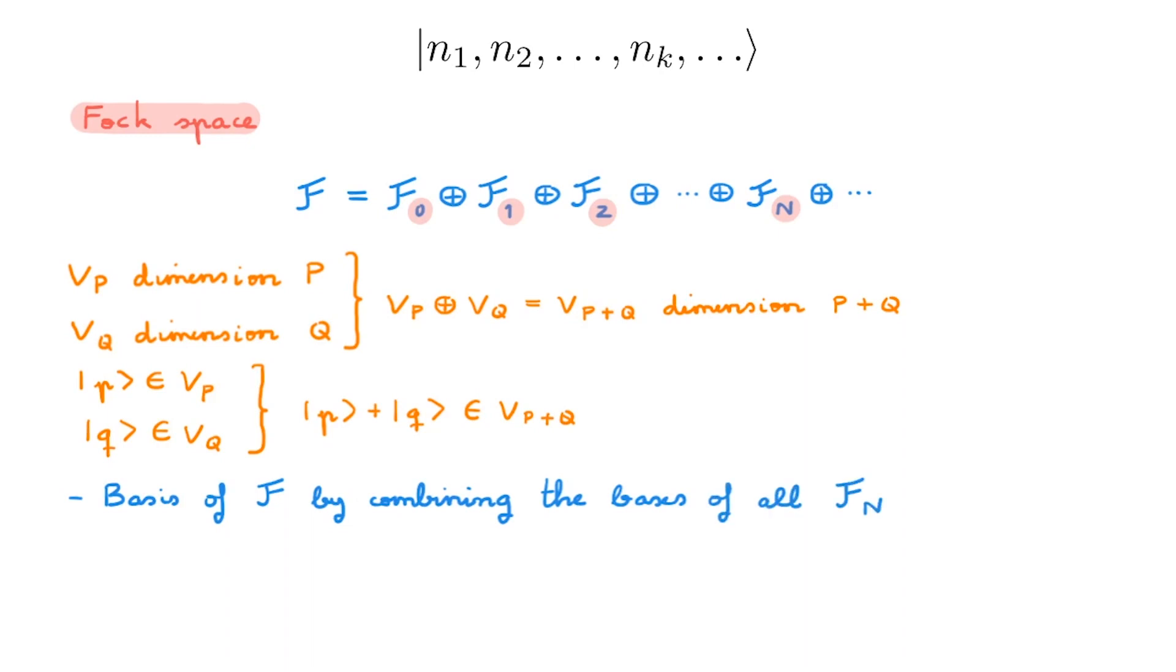Another important point is that by construction, two kets with different numbers of particles are orthogonal to each other. Remembering that the Fock state has a fixed number of particles, then we see that the Fock state is simply a state that belongs to a subspace Fn of the Fock space.